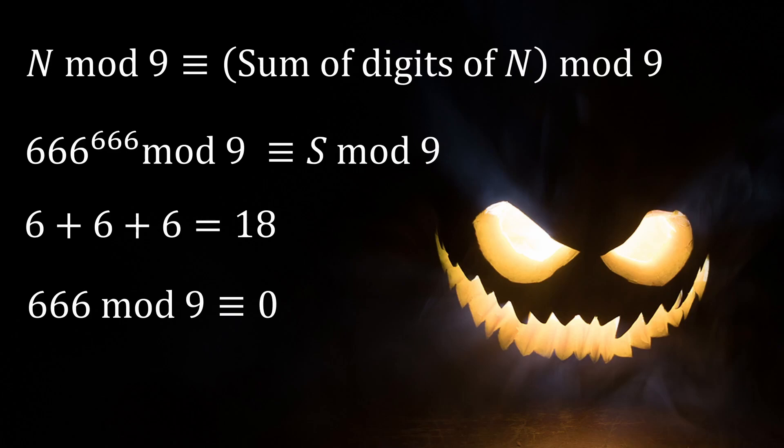From rules of modular arithmetic, 666 raised to any power mod 9 must also be congruent to 0.